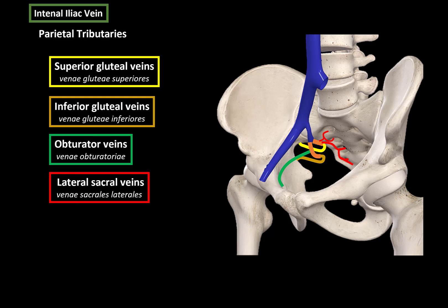Then we have the lateral sacral veins, which ascend along the sacral bone. Together with the median sacral vein, they form a plexus called the sacral venous plexus, which drains adjacent structures like the abdominal muscles and the pelvic lymph nodes. The iliolumbar vein might also open into the internal iliac veins, so it either opens into the common iliac or the internal iliac veins.